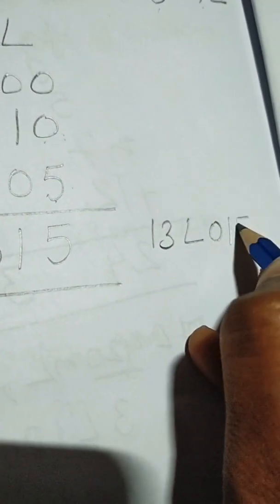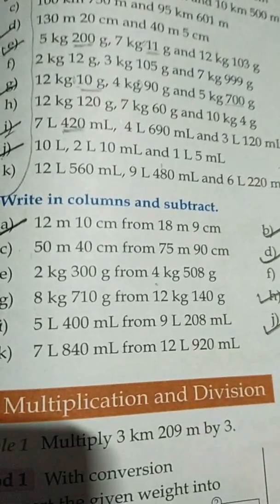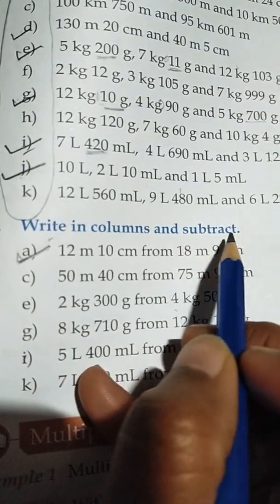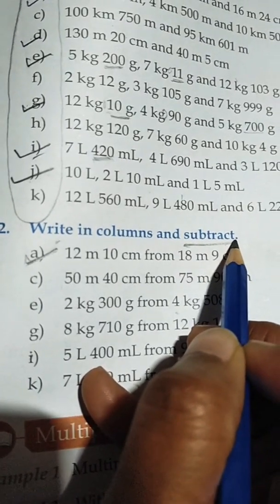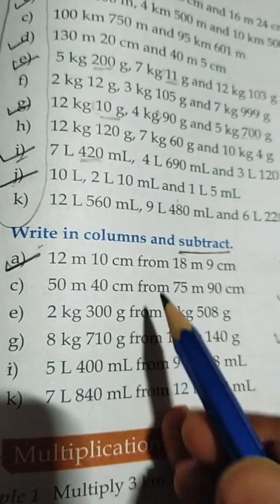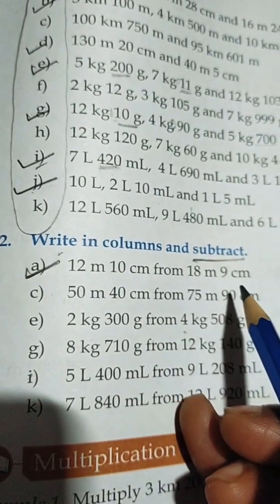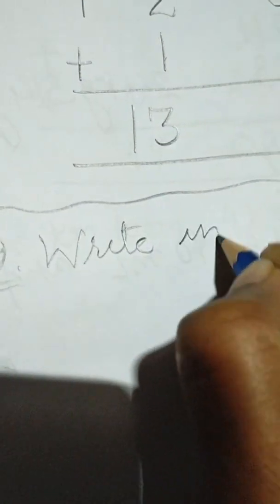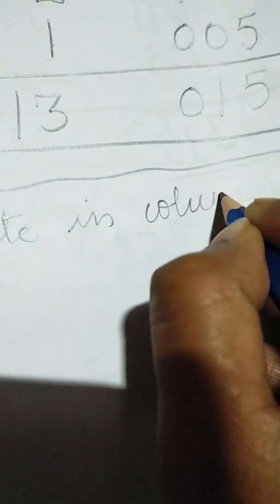Those were the sums of addition. Now let's move to sum number two: write in columns and subtract. The same important rule about number of digits applies here too. Let's start sum two.